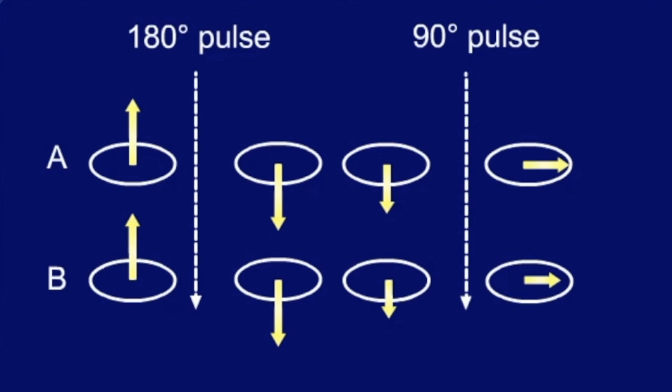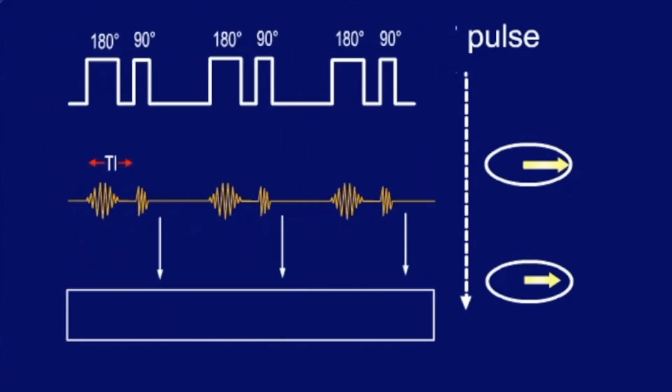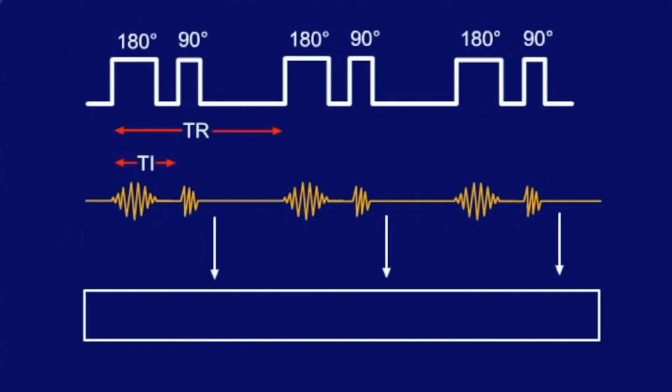The time after the inversion by the 180-degree pulse is thus called TI, inversion time. TR is the time between the sequences, as in the other pulse sequences. The signal intensity in an inversion recovery image is thus dependent on T1.